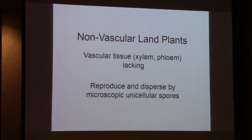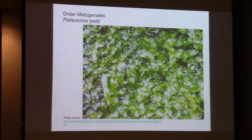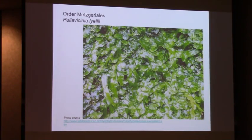We'll begin with a very brief overview of the non-vascular plants. They don't have vascular tissues - xylem and flow. They reproduce and disperse by microscopic unicellular spores. This one occurs fairly commonly here in southern Georgia in bay swamps. This is Pallavicinia lielia. Most of these don't have common names because they've escaped the notice of most people - there are no common names. We generally use the binomials because they're unambiguous.